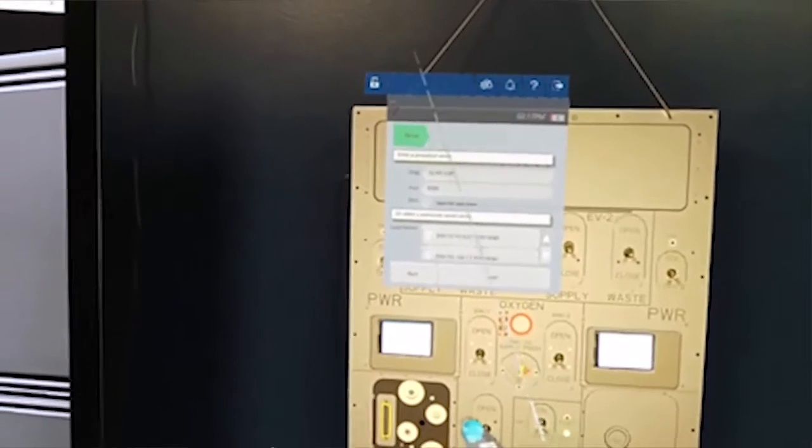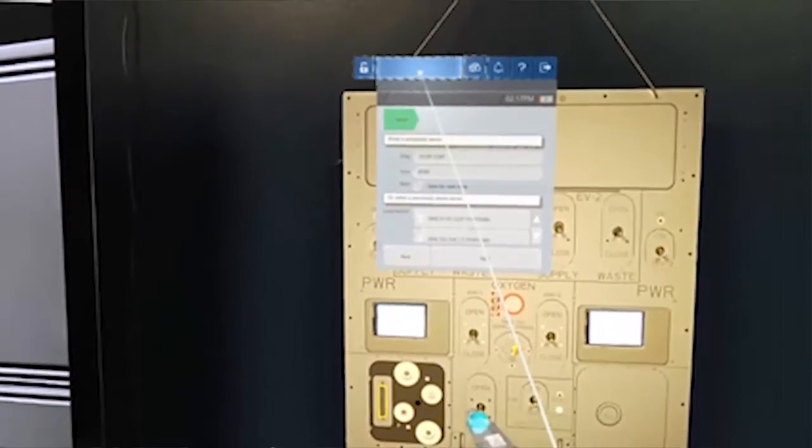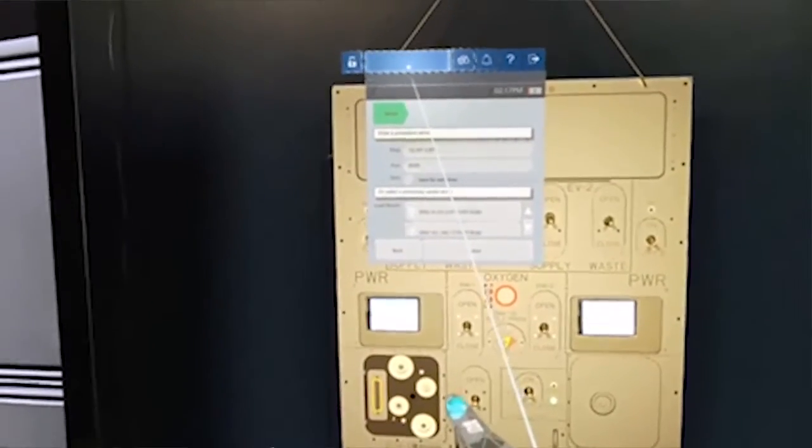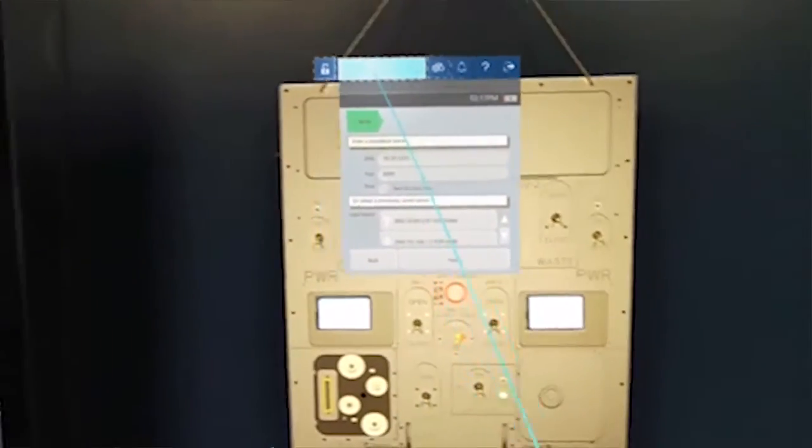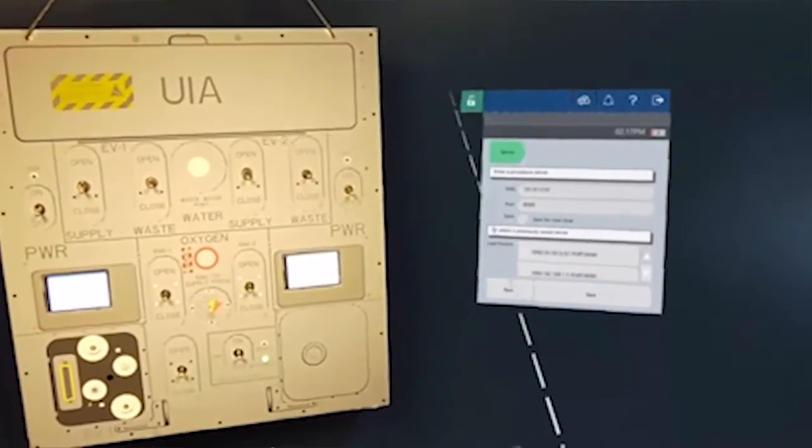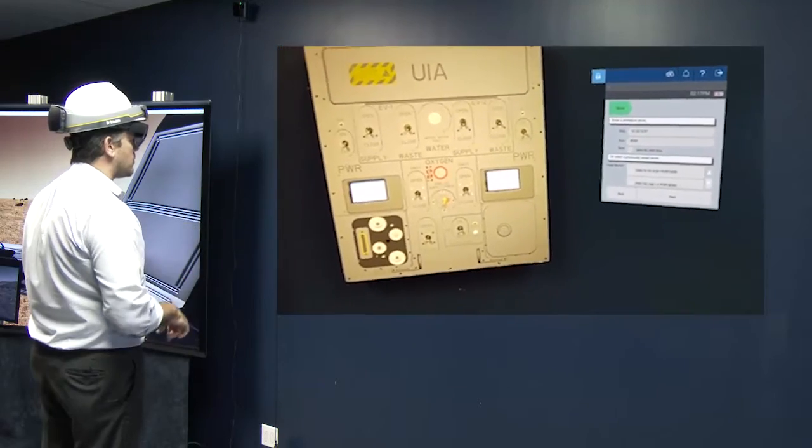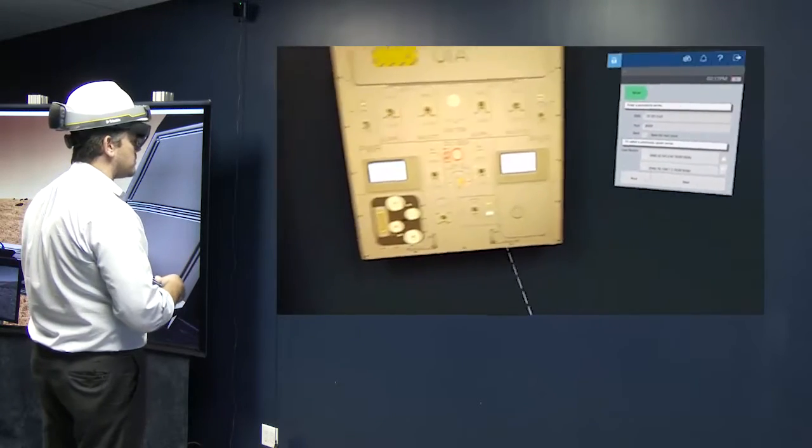Alright, now what you can see is I have this floating essential procedural guidance piece of kit. I can grab it, move it, manipulate it and put it to where I want it. Now what I'm going to do is lock it in place so I keep it out of the way of